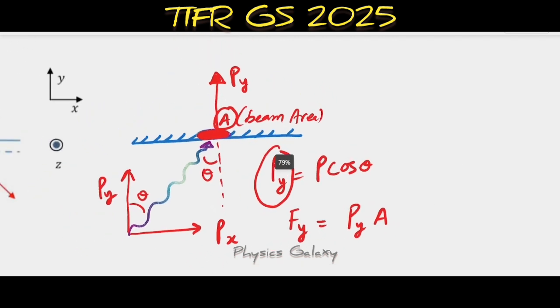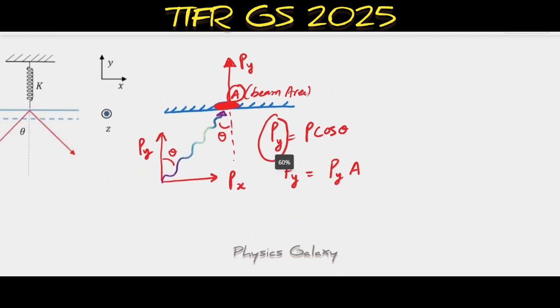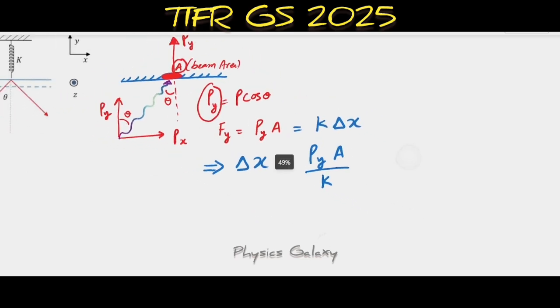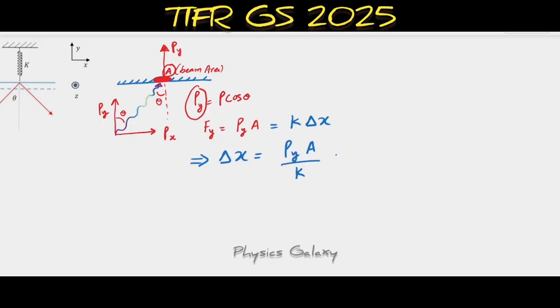From here we can calculate Δx. Δx will be simply PᵧA divided by K. And what is Pᵧ? It is P cos θ times A divided by K.